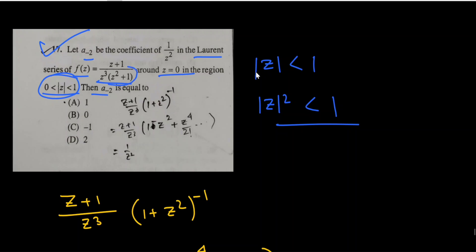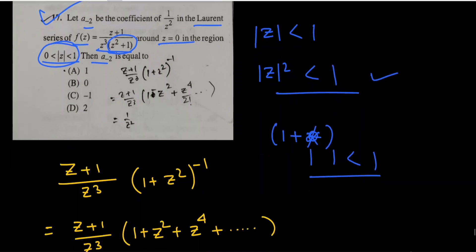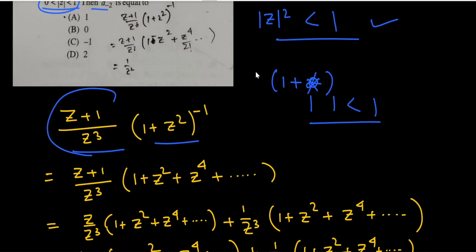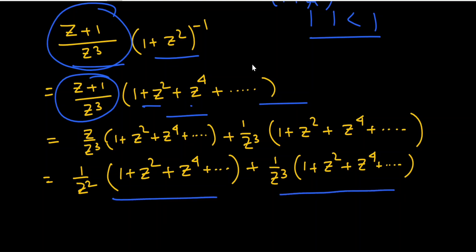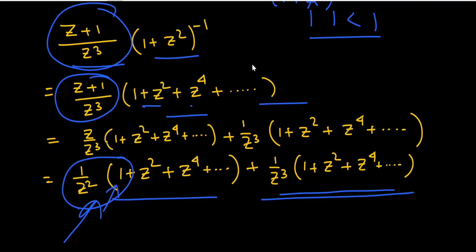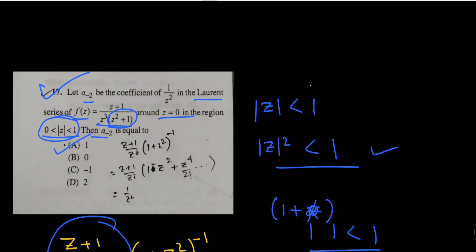We expand 1/(z²+1) = 1/(1+z²) as a power series: since |z²| < 1, this equals 1 - z² + z⁴ - ···. Multiplying through, we split the series: the 1/z² term times the series gives terms with 1/z², while the 1/z³ term does not contribute 1/z². From the first part, only the leading term gives 1/z², so the coefficient a₋₂ = 1. The correct answer is option A.